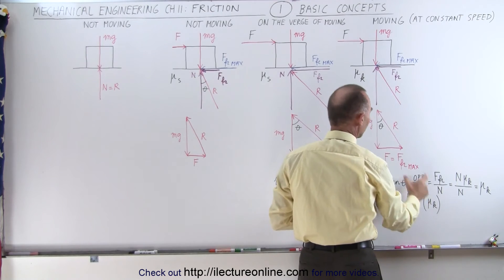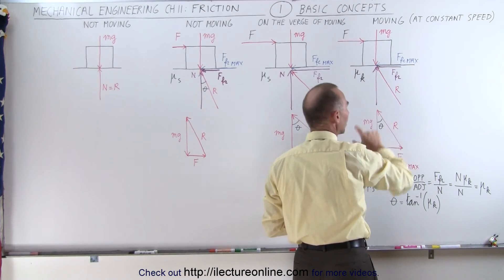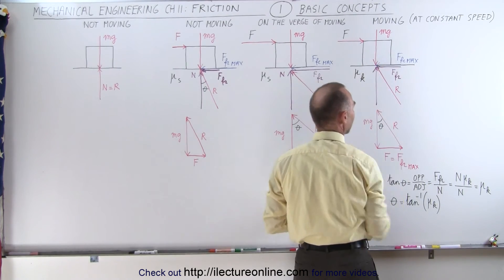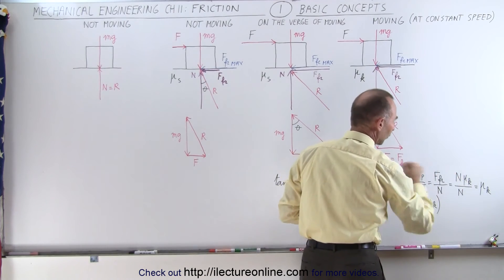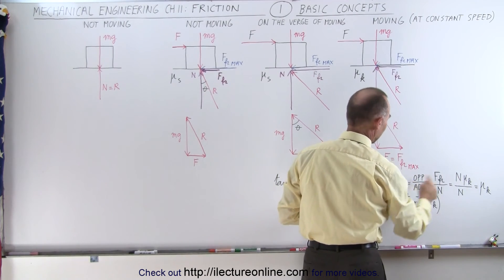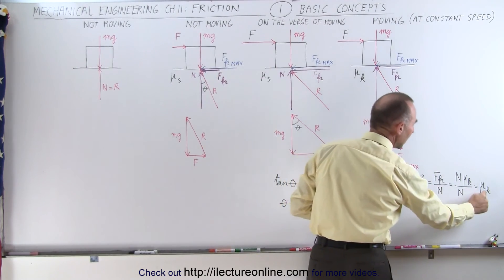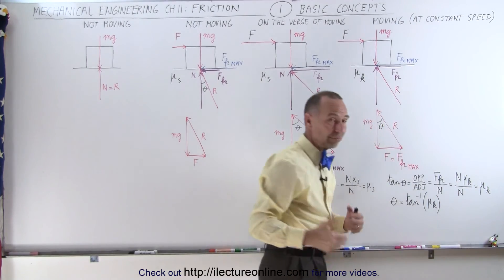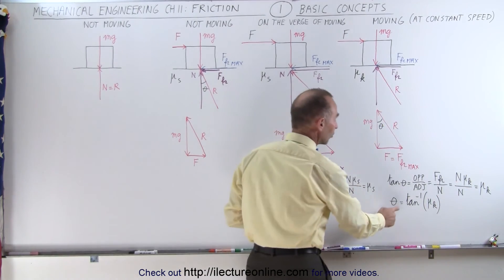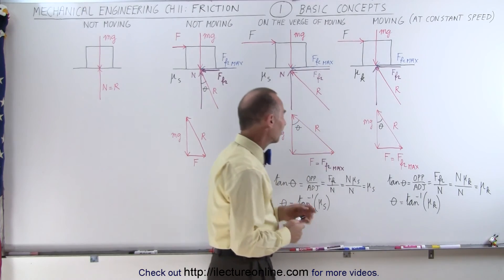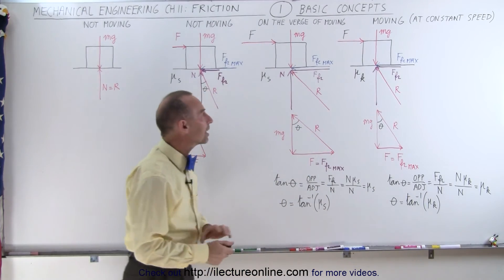We divide that by the adjacent side, which is the weight, equal to the normal force. The normal force cancels out, and now we can say that the tangent of theta equals the kinetic coefficient of friction, because the block is moving. We can solve for the angle in the same way as before.